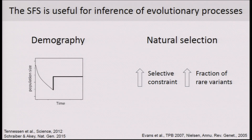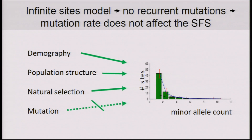Since the SFS is shaped by evolutionary processes, it can be used for inference of quantities we're interested in about those same processes. Two prominent examples are demographic inference and inference about natural selection. With all the different things that go into determining the shape of the distribution, it has been historically convenient to assume that there is one evolutionary force we don't have to think about too much, and that is mutation and mutation rates.